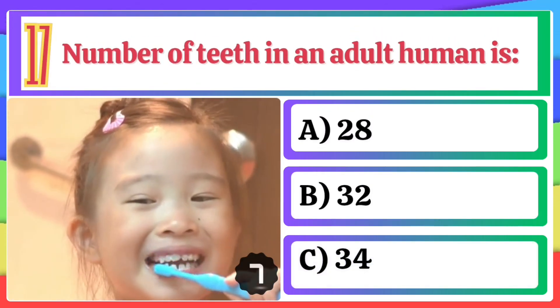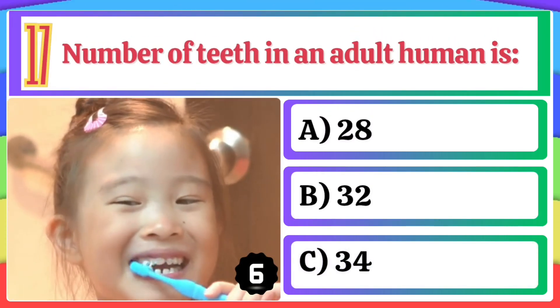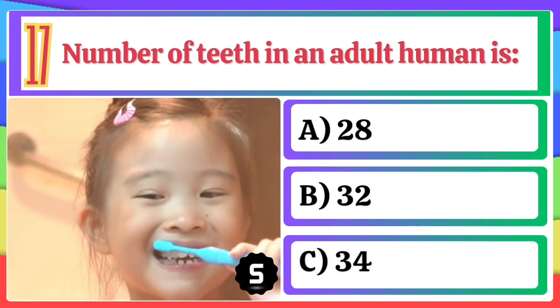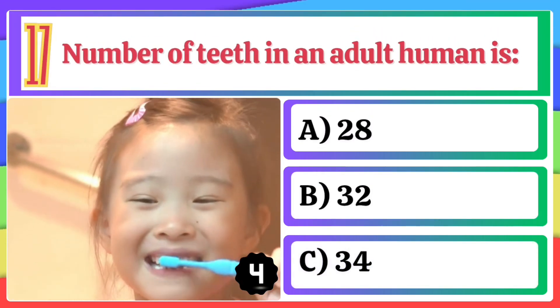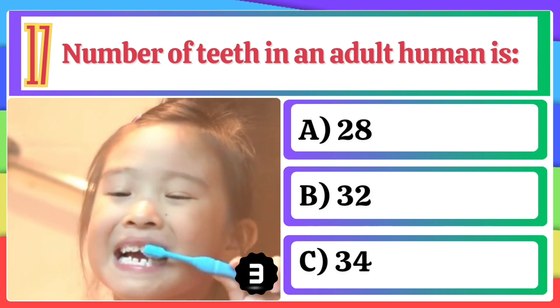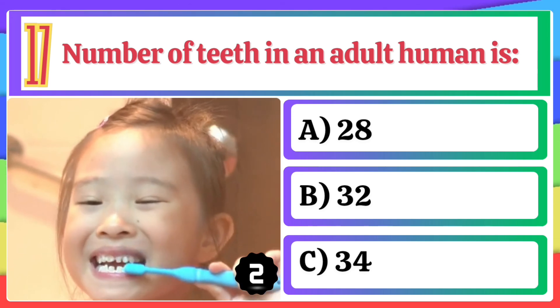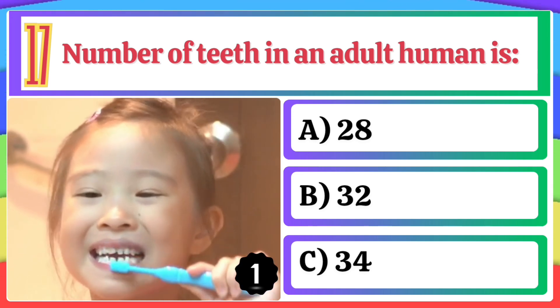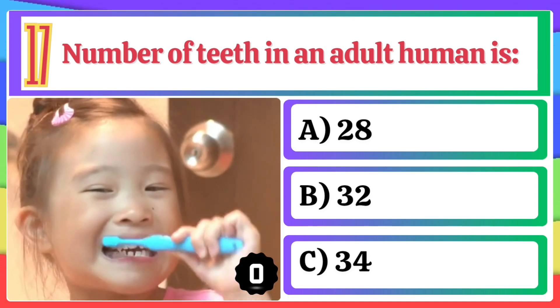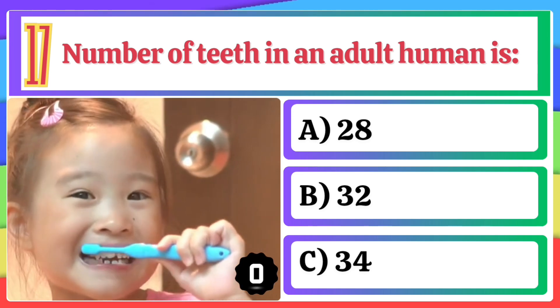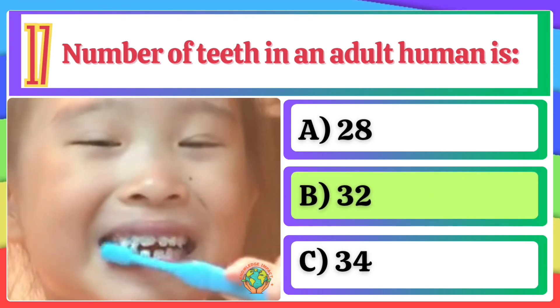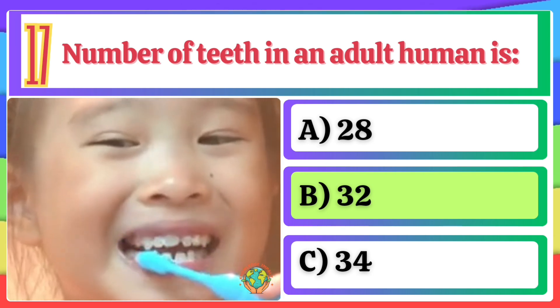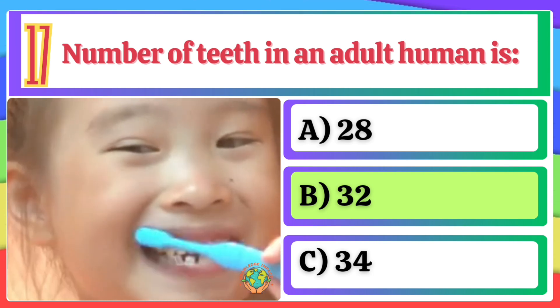Number of teeth in an adult human is: A) 28, B) 32, C) 34. The correct option is B, 32.